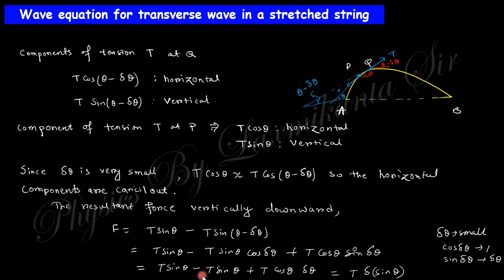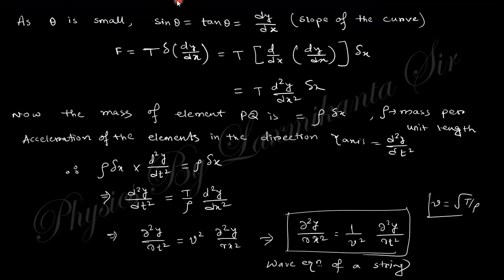The horizontal components cancel out, leaving only the vertical component, which can be written as T times delta(sin theta). When theta is very small, sin(theta) equals tan(theta) because cos(theta) is nearly 1. Therefore, tan(theta) is simply the slope of the curve with respect to x, which can be written as del-y/del-x, since y is a function of both x and t.